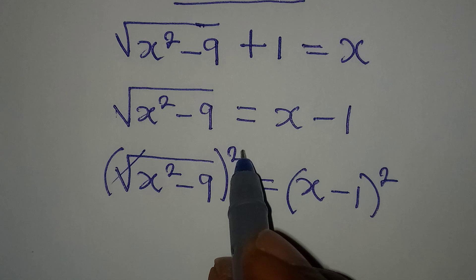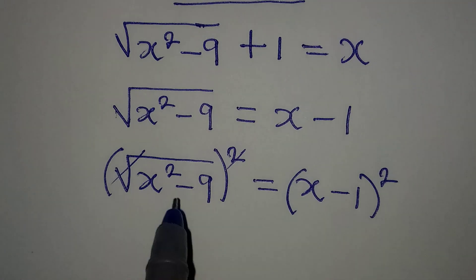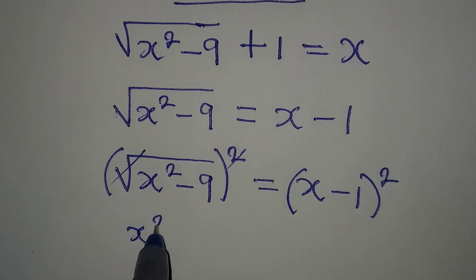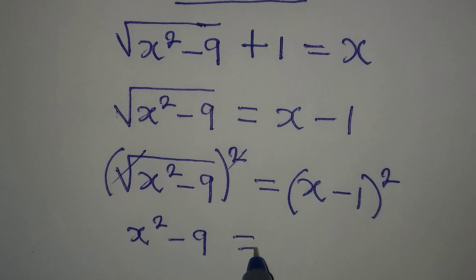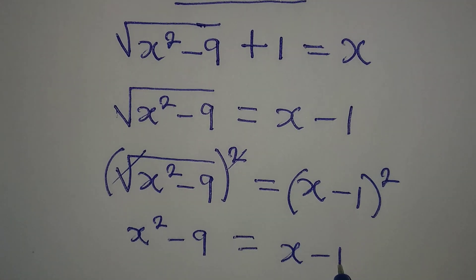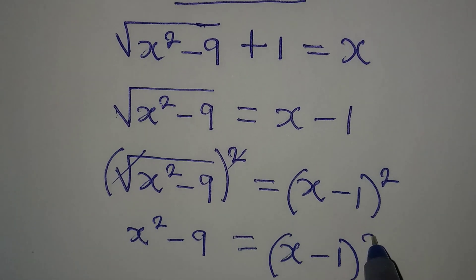Now this and this will be gone, right? So we have x squared minus 9 which will be equal to x minus 1 to the power of 2.